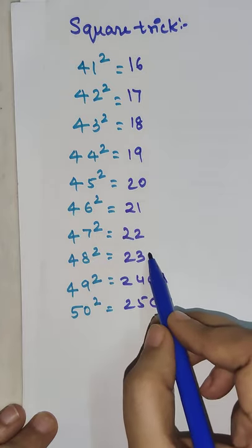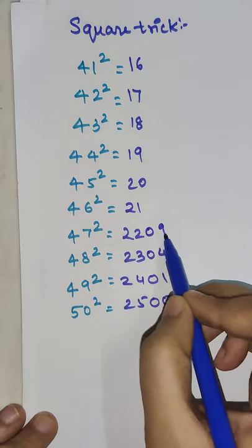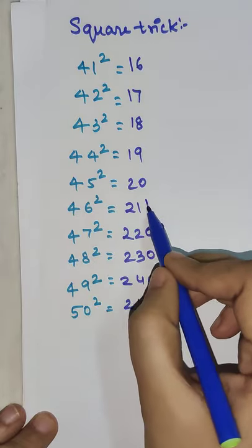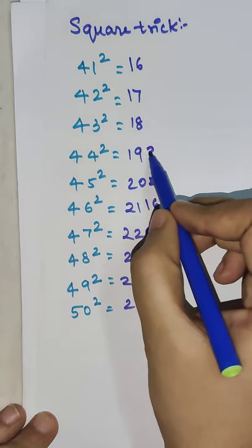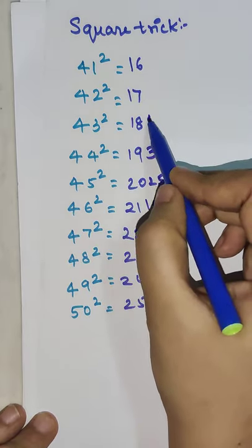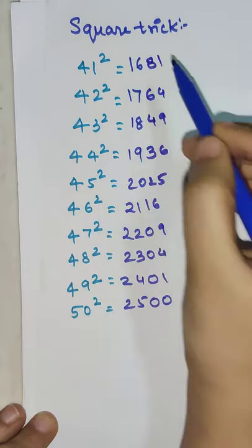Square of 1 is 01, square of 2 is 04, square of 3 is 09, square of 4 is 16, square of 5 is 25, square of 6 is 36, square of 7 is 49, square of 8 is 64, and square of 9 is 81.